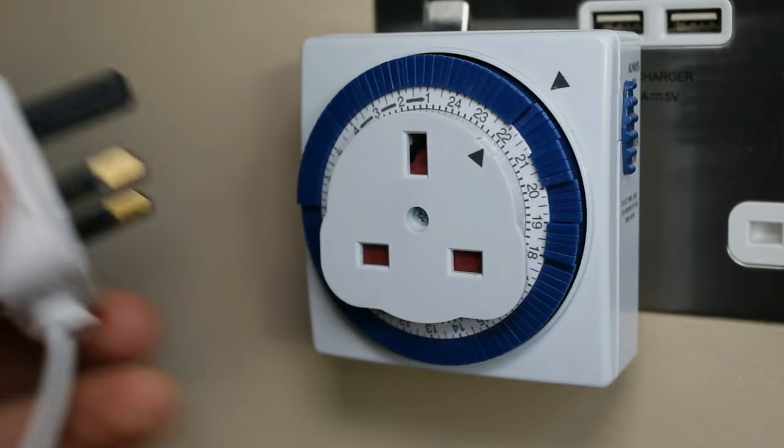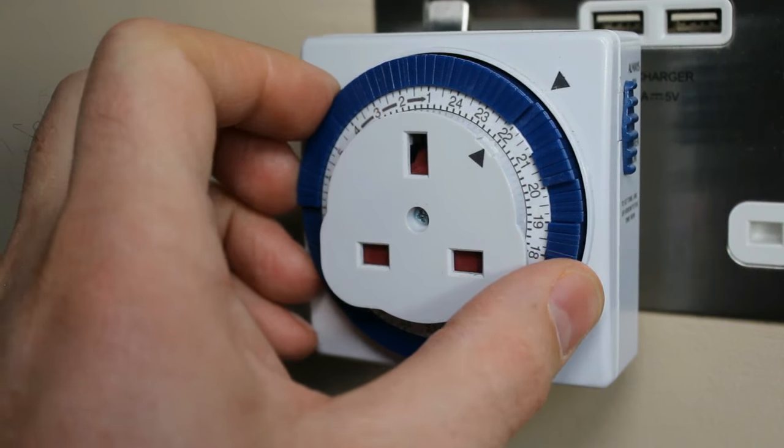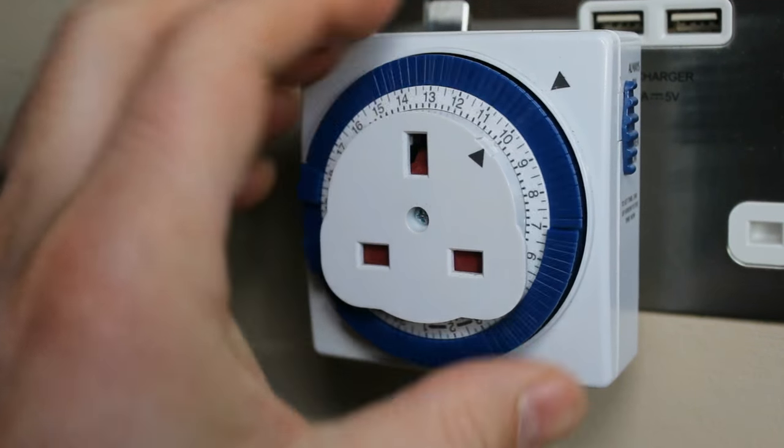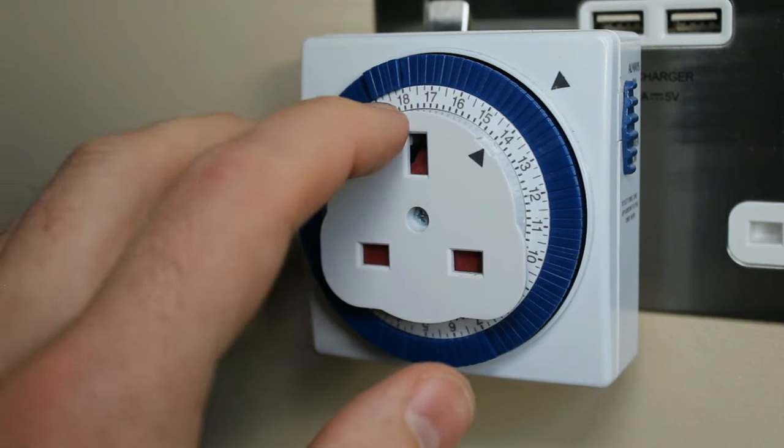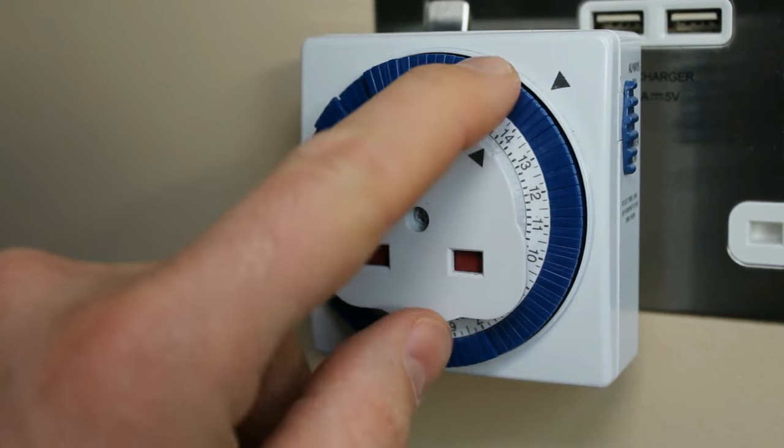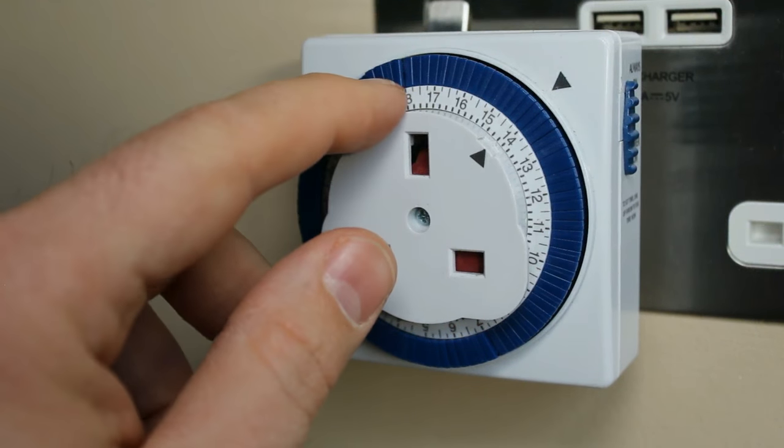So that's it really, just a few things to remember. You set the timer that it is now by there, by the arrow. So that's, in this case, two o'clock in the afternoon. When the segment's down, that means it's on. When the segment's pulled up, that means it's off.